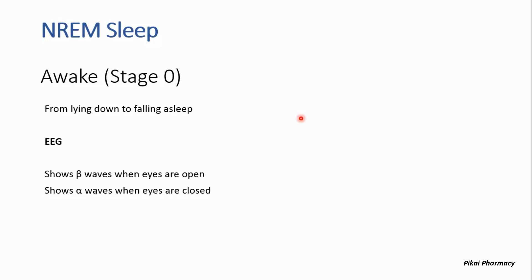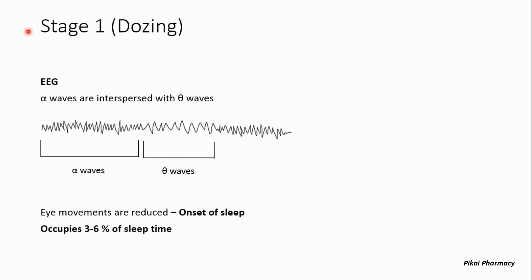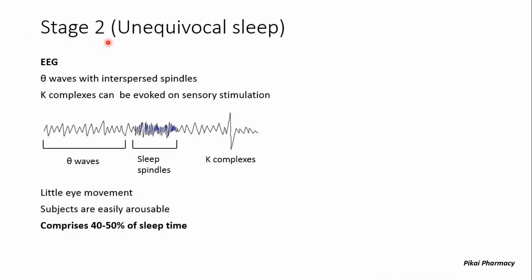In stage 0, the EEG mainly shows beta waves, which represents open eyes. Moving to stage 1, also known as the dozing stage, the EEG mainly shows alpha waves interspersed with theta waves. Eye movements are reduced in this stage, denoting the onset of sleep, and the dozing stage occupies 3 to 6 percent of total sleep time.